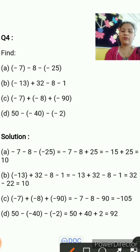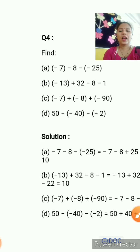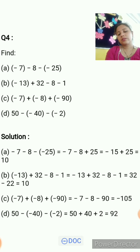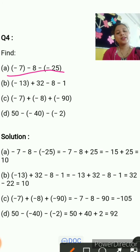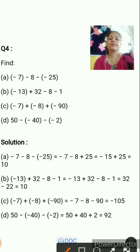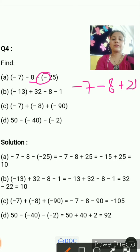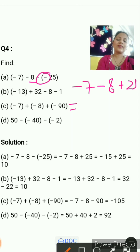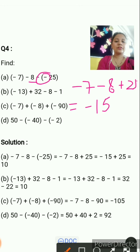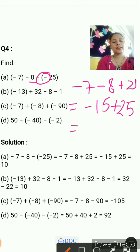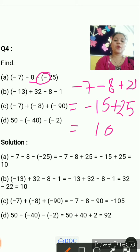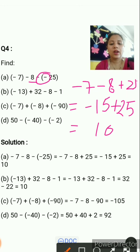Question number 4 — find the solution of parts A, B, C, D. Part A: minus 7 minus minus 8 minus minus 25. Apply sign rules: minus minus becomes plus, so we write minus 7 minus 8 plus 25. First, minus 7 minus 8 equals minus 15. Then minus 15 plus 25: 25 minus 15 equals 10, and it is positive 10 because 25 is positive. Answer is 10.